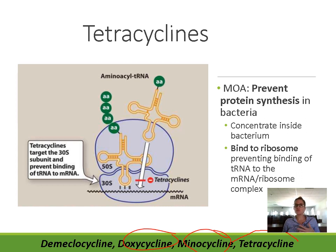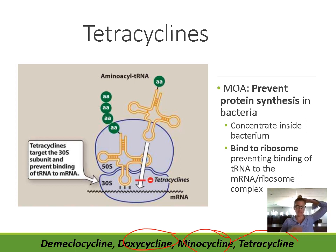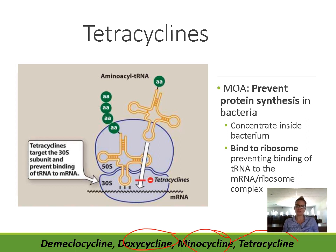Some protein synthesis inhibitors — like the tetracyclines or chloramphenicol — can be toxic at high doses because at high doses they stop being specific for bacterial cells and can start to inhibit protein synthesis in our body cells, which is obviously toxic. But at typical normal doses, they are relatively specific for bacterial cells.